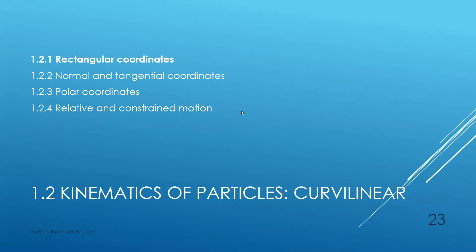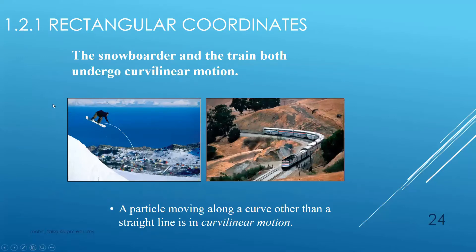To begin with, we look into another subtopic which is rectangular coordinates. Consider the snowboarder and the train — both undergo curvilinear motion. As you can see, the snowboarder jumps, flies, and makes a curved path before landing. Similarly, the train goes through a steep corner.